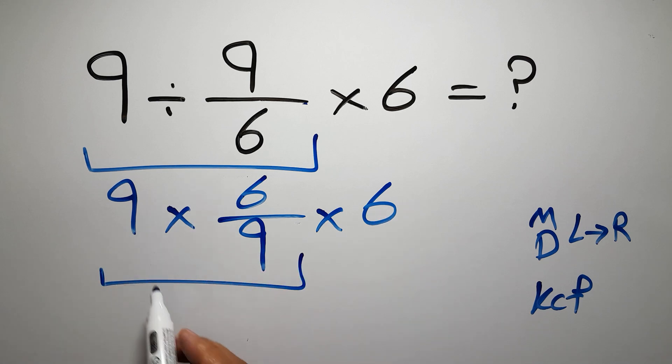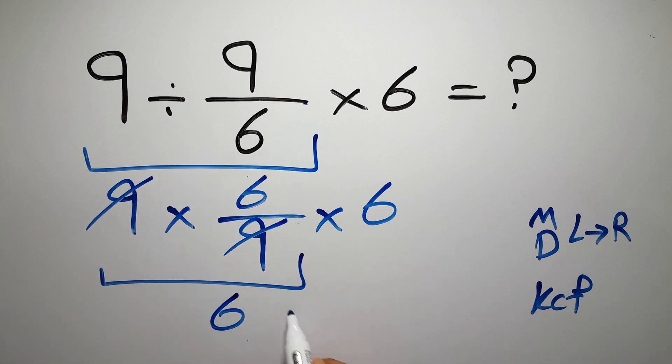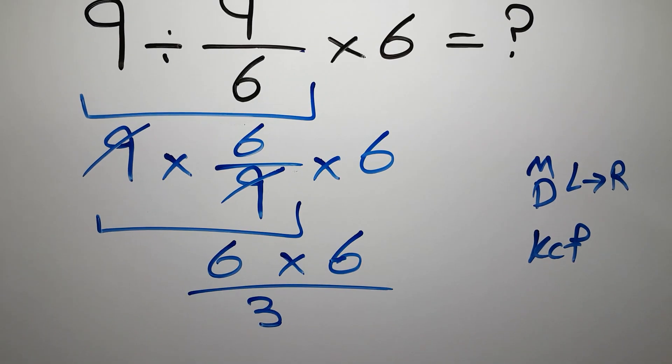First we do this multiplication. This 9 and this 9 can cancel each other, so we have just 6. And 6 times 6 which equals 36. And this is our final answer to this problem.